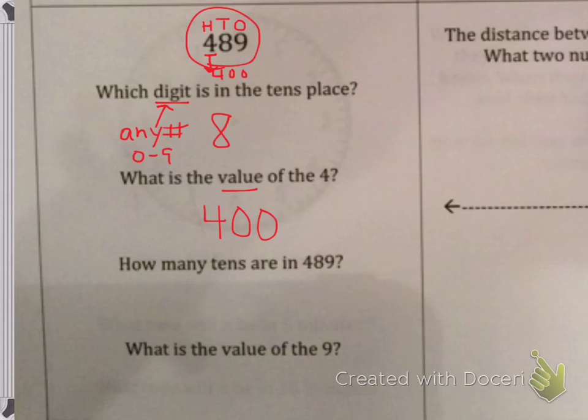How many tens are in four hundred and eighty-nine? I'm going to write four hundred and eighty-nine. I know this is my tens place, and I'm going to circle to the left.